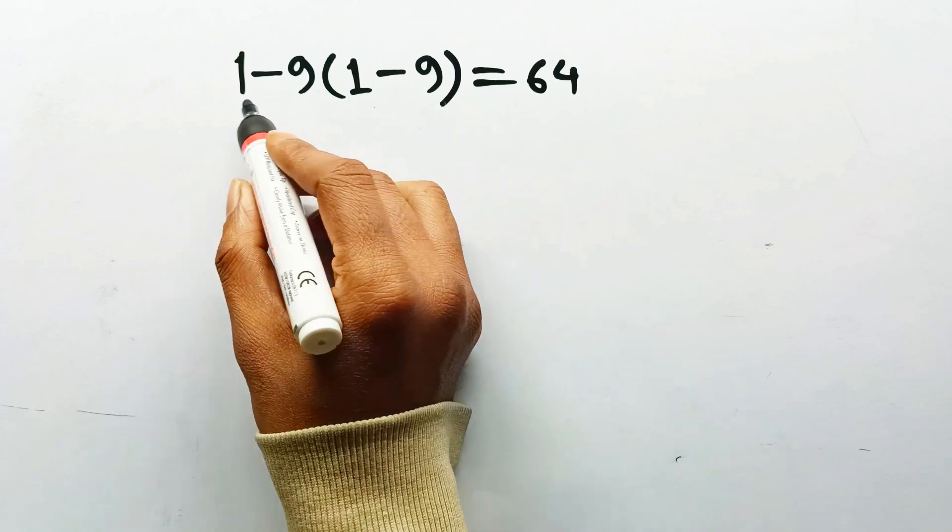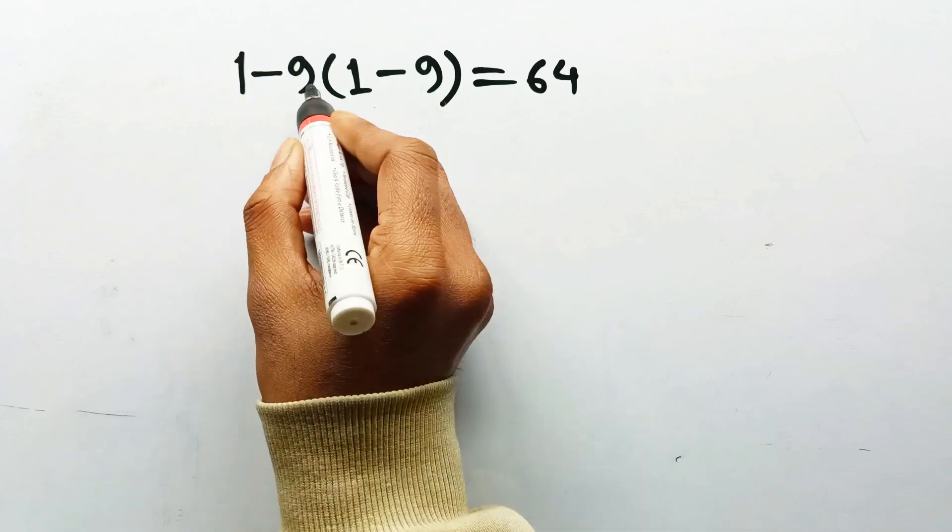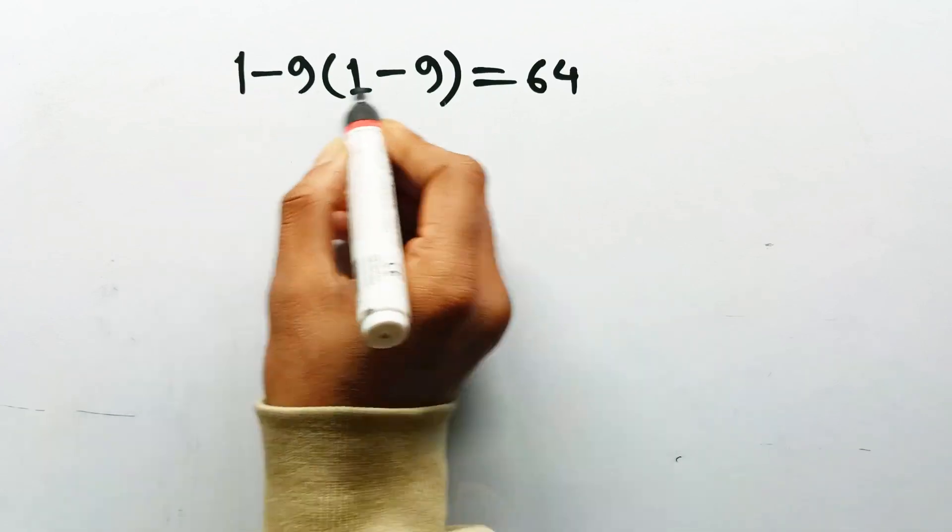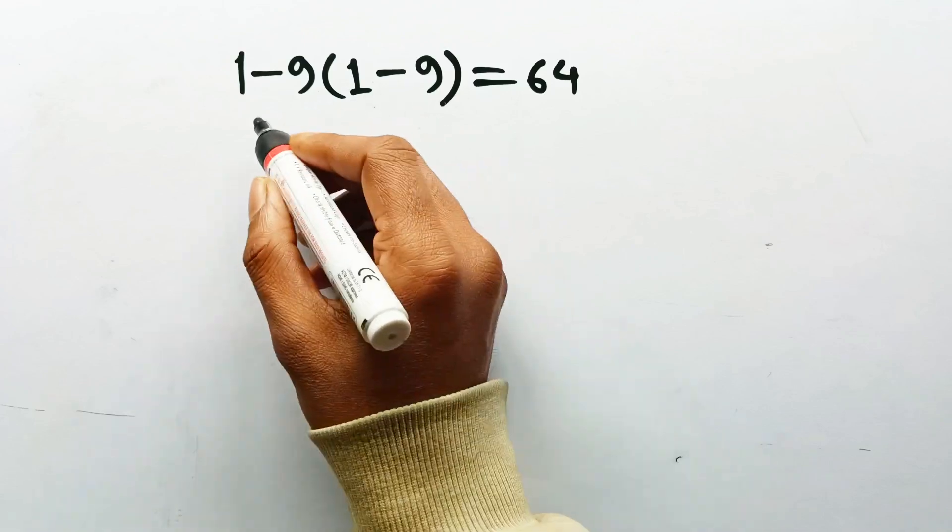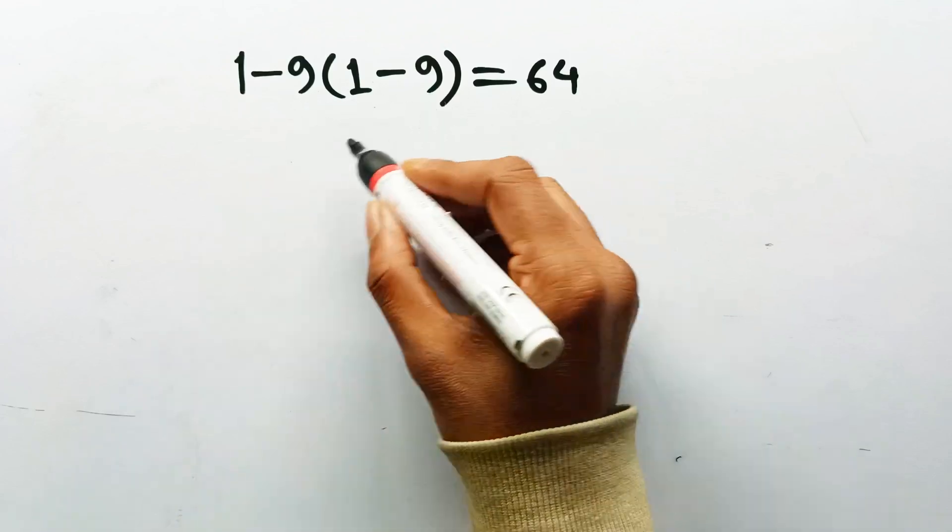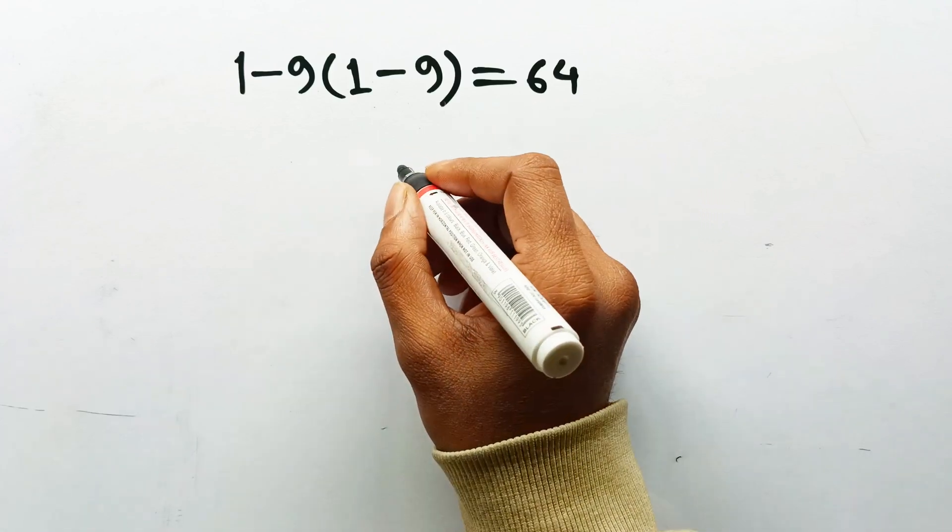1 minus 9 times 1 minus 9. And don't lie, your brain already went easy. You saw two copies of 1 minus 9, turned them both into negative 8, multiplied negative 8 by negative 8, and proudly landed on 64. Case closed. Victory music playing.